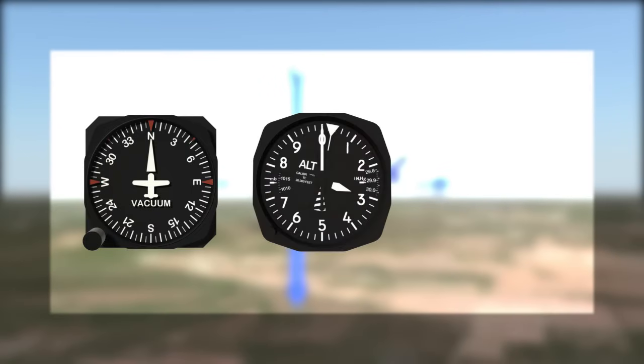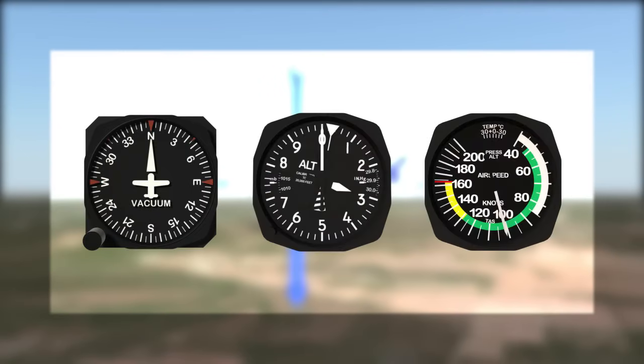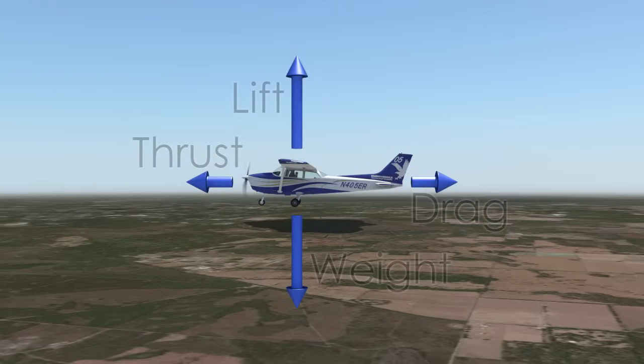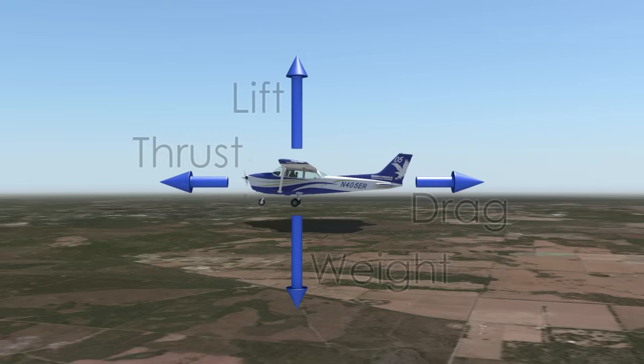When an aircraft is maintaining its heading, altitude, and airspeed, it is said to be in straight and level, unaccelerated flight. In unaccelerated flight, lift equals weight and thrust equals drag.